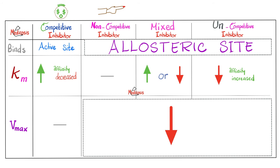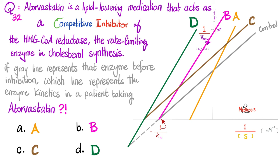Here's the summary table comparing all four types: competitive inhibitor binds the active site (front door); all others bind the allosteric site (back door). Competitive inhibitor raises Km (lowers affinity) but does not change Vmax. Non-competitive inhibitor: no change in Km or affinity, but lowers Vmax. Mixed inhibitor: may increase or decrease Km but always decreases Vmax. Uncompetitive inhibitor: lowers Km (increases affinity) and lowers Vmax.